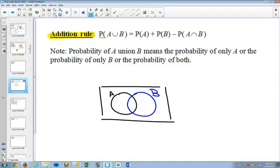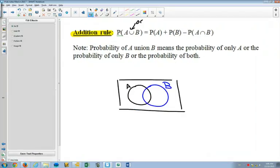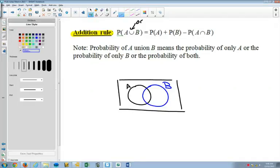What this is saying is I want to find the probability of A or B, right? And we're going to make a highlighter here. I'm going to grab a new pen.